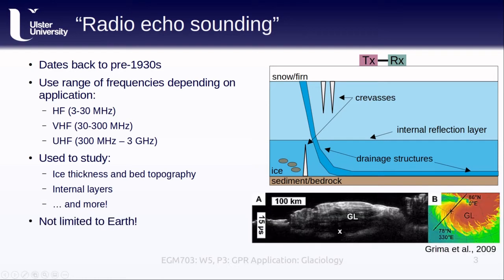These studies aren't limited to glaciers and ice sheets on Earth either. There are currently two radar sounders in orbit around Mars that have been used to map surface ice deposits, like the example shown here of the Gemina Lingula region of Mars taken from the shallow radar sounder, or SHARAD, on board NASA's Mars Reconnaissance Orbiter.